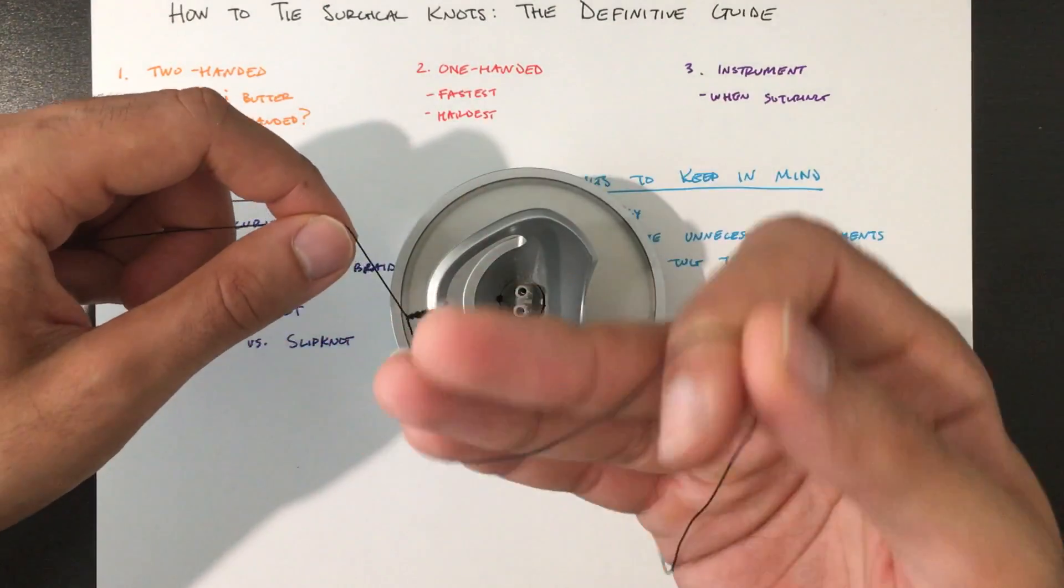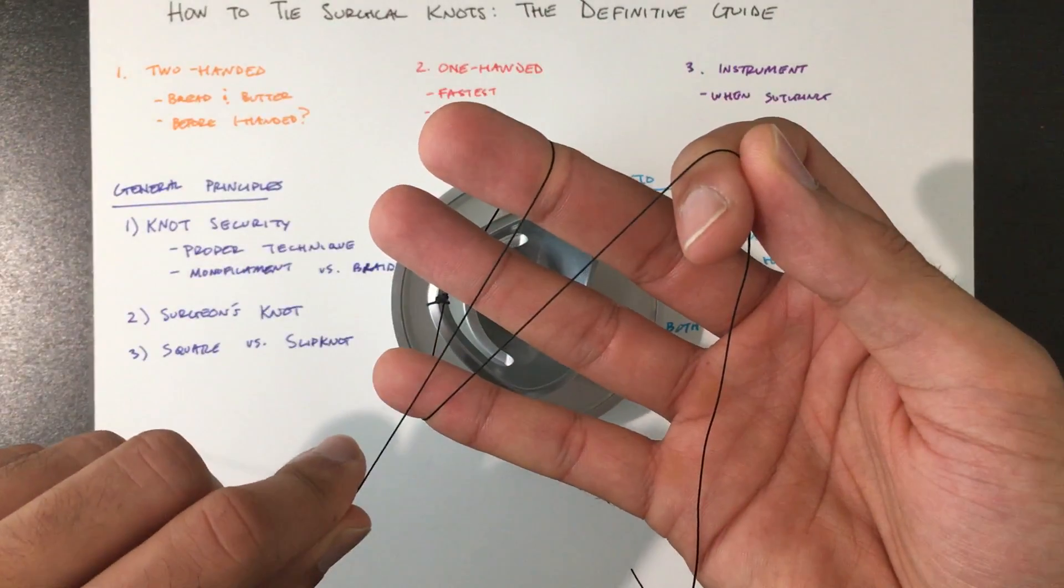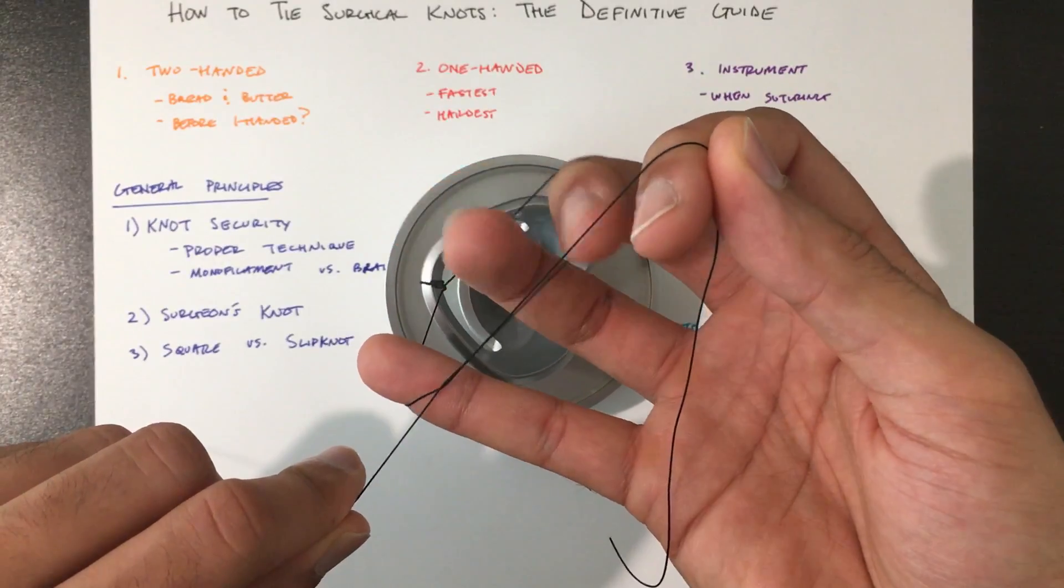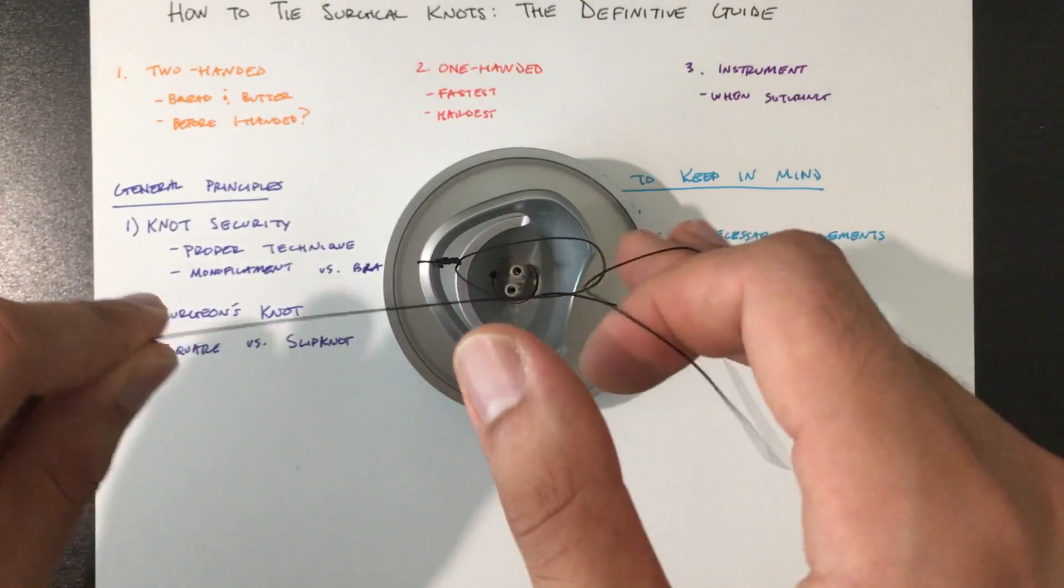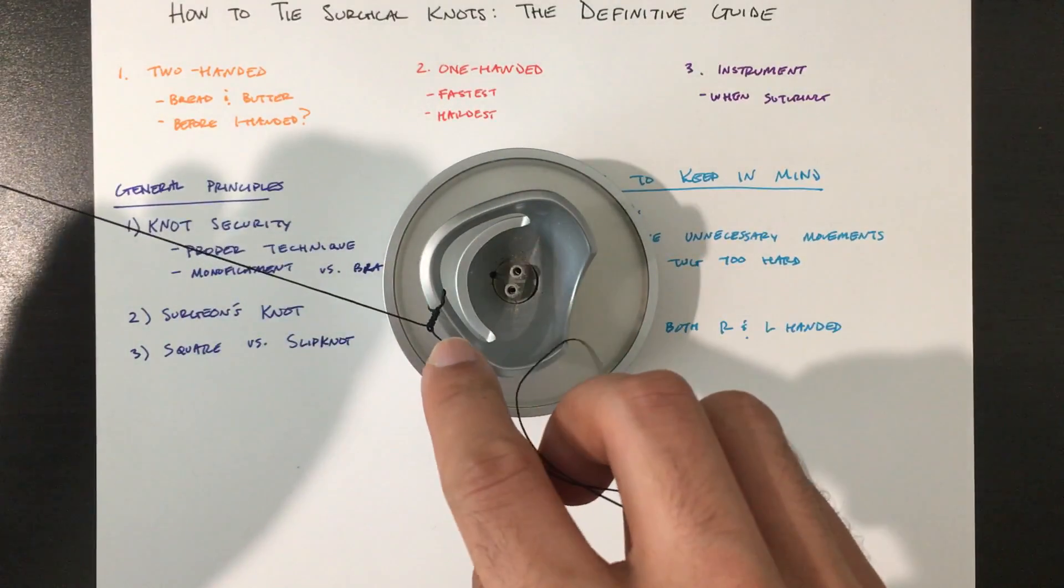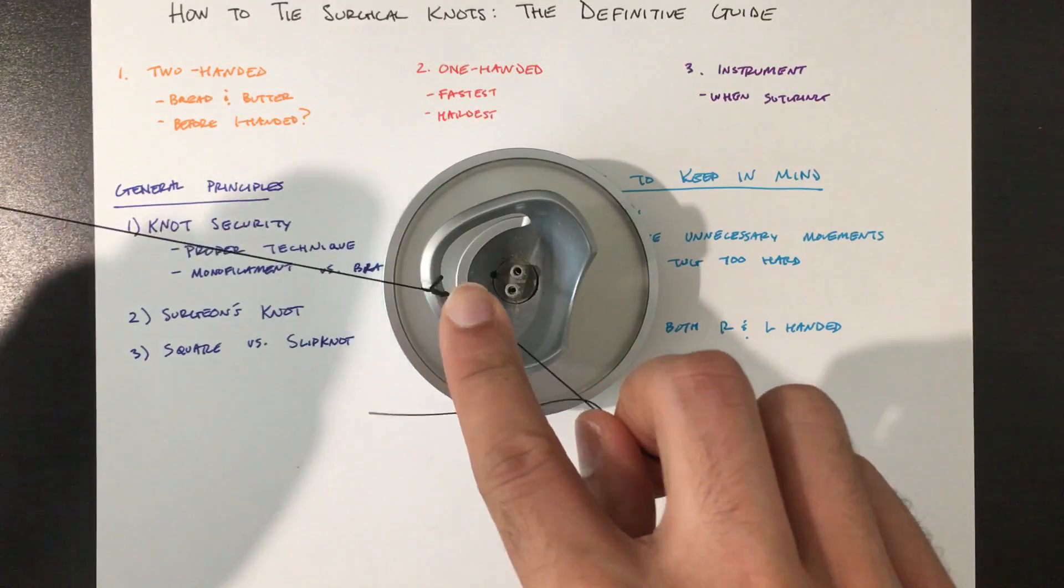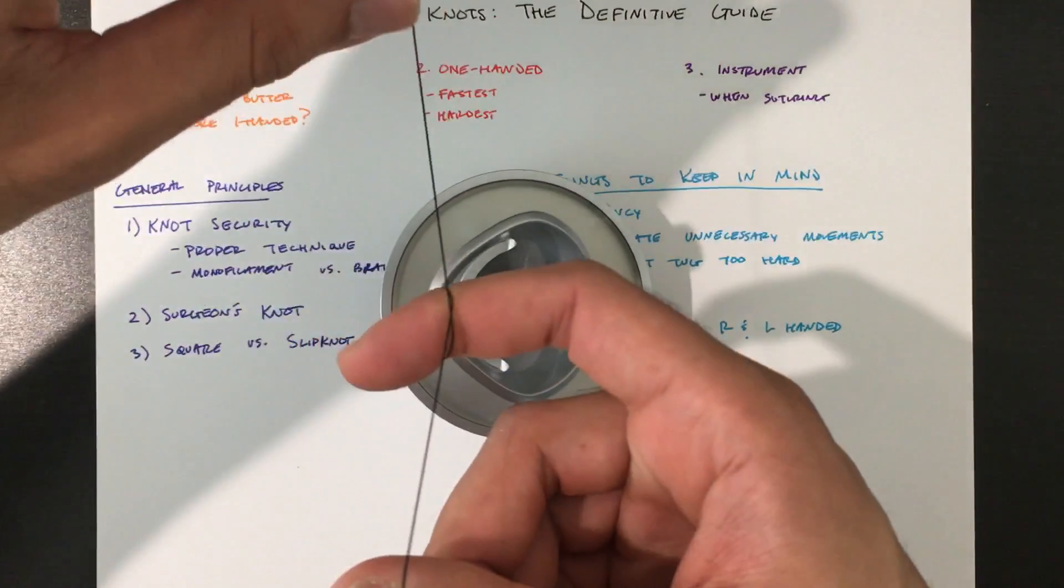Again, now we're going to do the book with the right. And remember, push down with your index finger. Again gun. Here's the gun. Wrap it in the opposite direction.